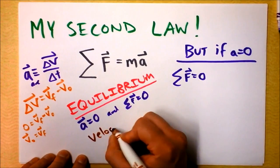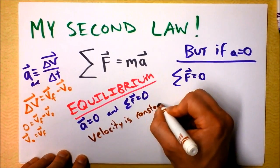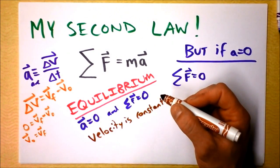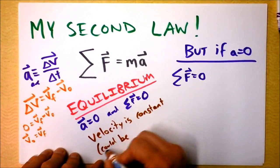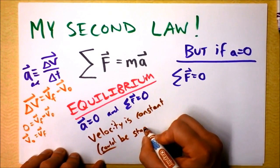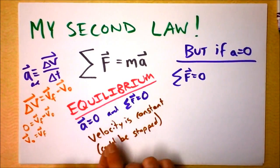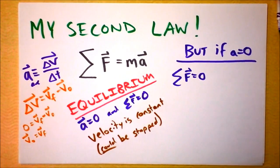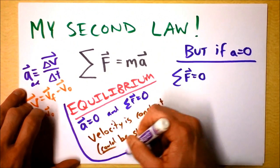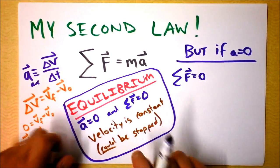Velocity is constant. I do not mean that the thing is stopped necessarily — it could be stopped. If something is stopped and just sitting there, then it's not accelerating. But if the velocity is constant, then I know I've got equilibrium. That's my equilibrium box: the net force on something is zero when the acceleration is zero and the velocity is constant.